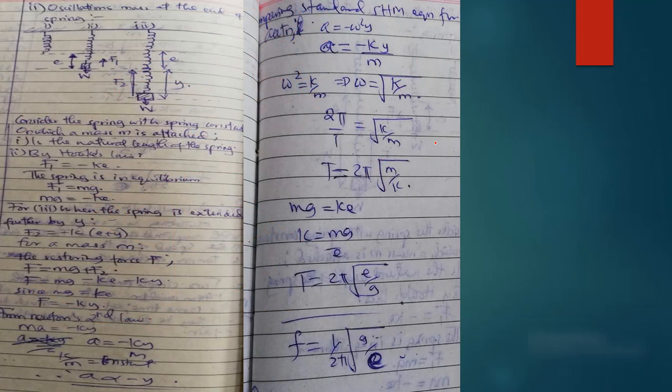The second application that we have is an oscillating mass at the end of a spring. This also exhibits a simple harmonic motion, as we shall see. Remember, a mass that is attached in a spring, the oscillation acts in terms of simple harmonic motion.